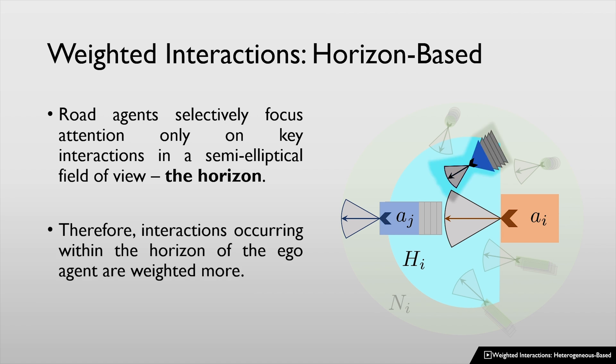Consider a motorcyclist who suddenly moves in front of a car and whose neighborhood consists of other road agents such as three-wheelers and pedestrians. The car must prioritize the motorcyclist interaction over the other interactions to avoid a collision.